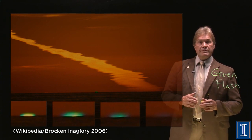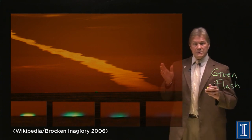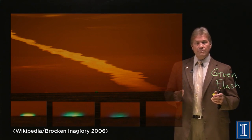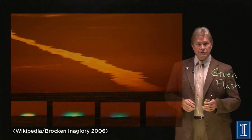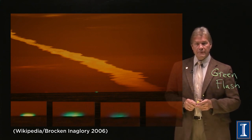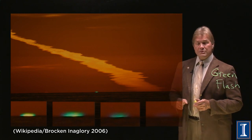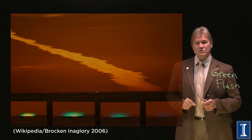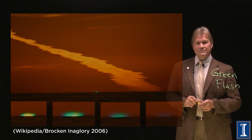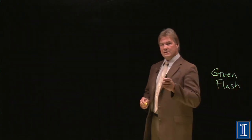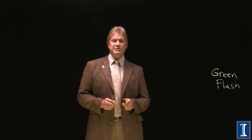The sun has all of the colors, and the rainbow shows it to you vividly. But a sunset can also act the same way if you get the conditions just right. That's what you need to know about why the sky is blue.